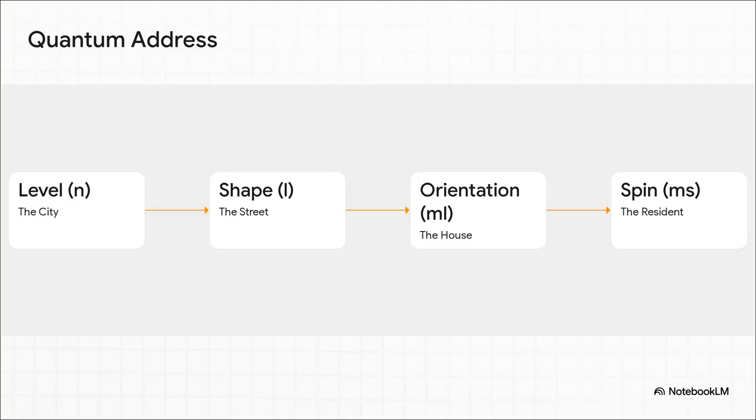So, let's just quickly put it all together. The full address starts with n, the principal quantum number. That's our energy level, the city. Inside that city, l tells us the orbital shape, our street. Then ml specifies that orbital's orientation. That's our house number. And finally, ms describes the electron spin, a unique property of our resident.